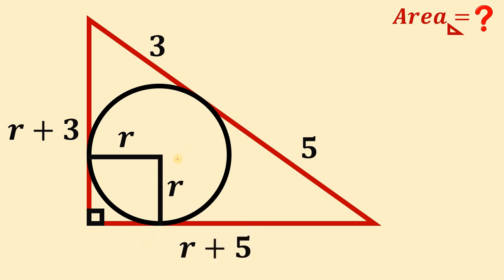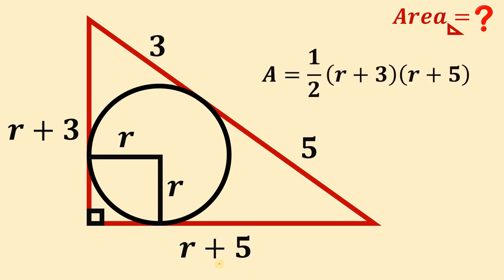We can now find the area of this triangle. The area of a triangle equals one-half times base times height. The base is equal to R plus 5 and the height is equal to R plus 3. So the area equals one-half times (R plus 5) times (R plus 3).